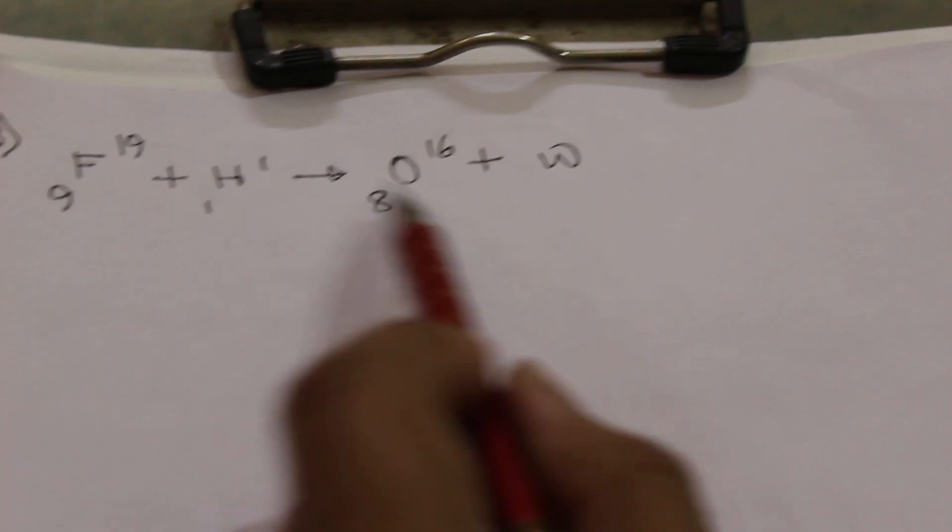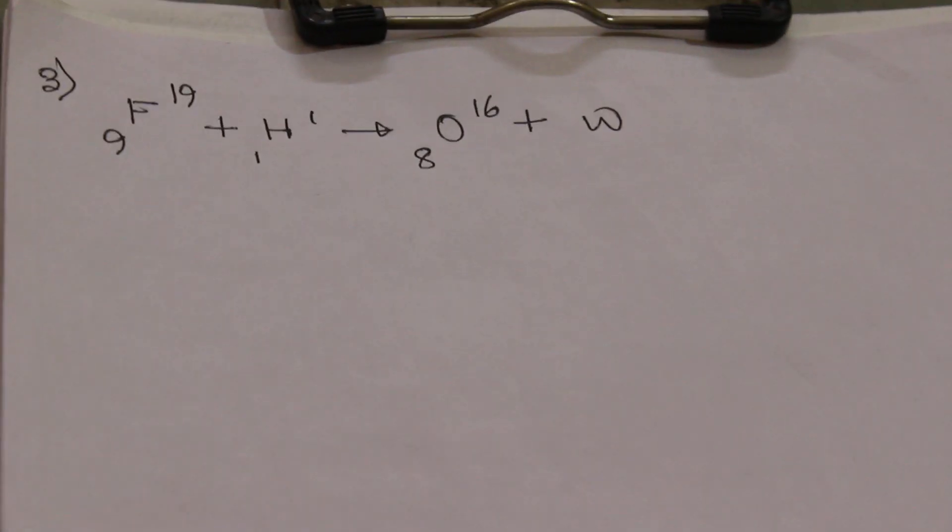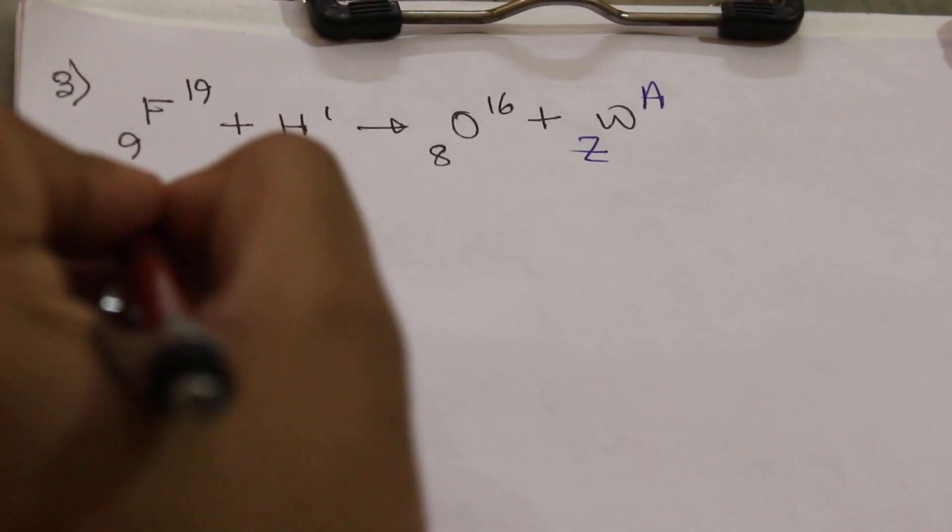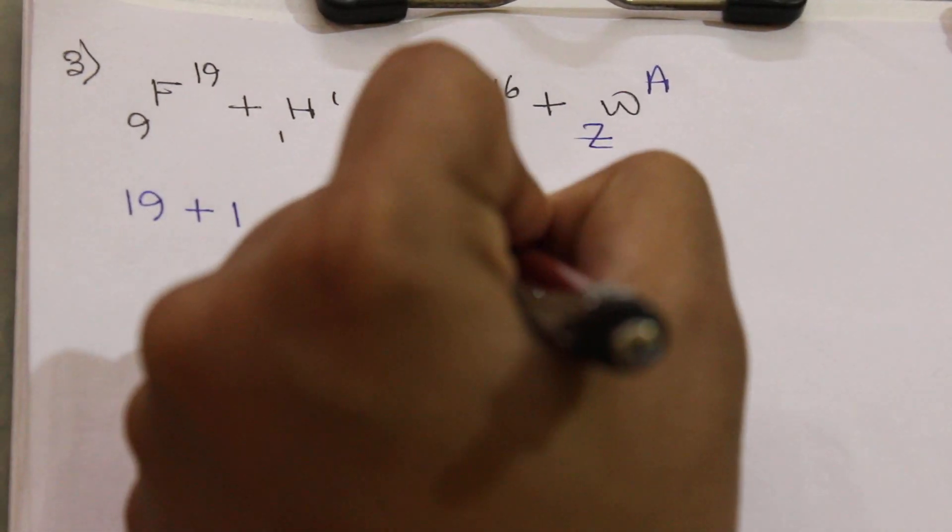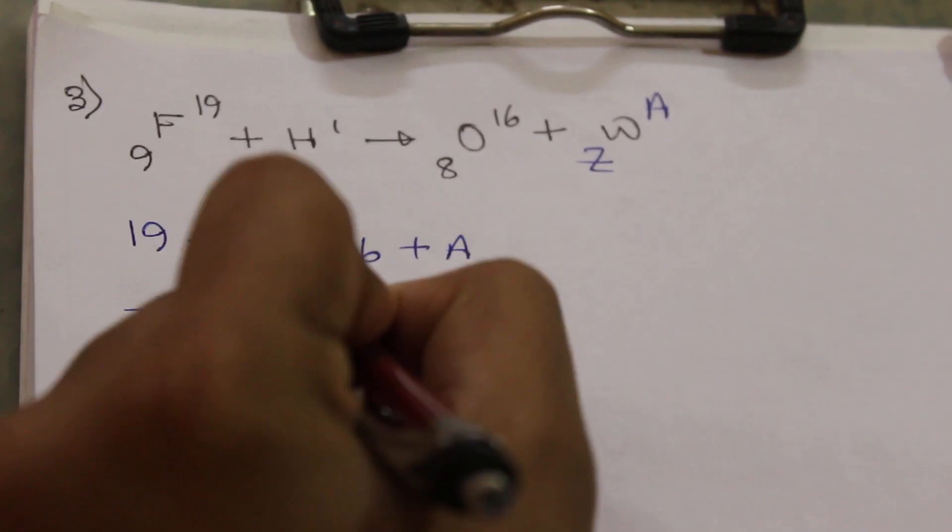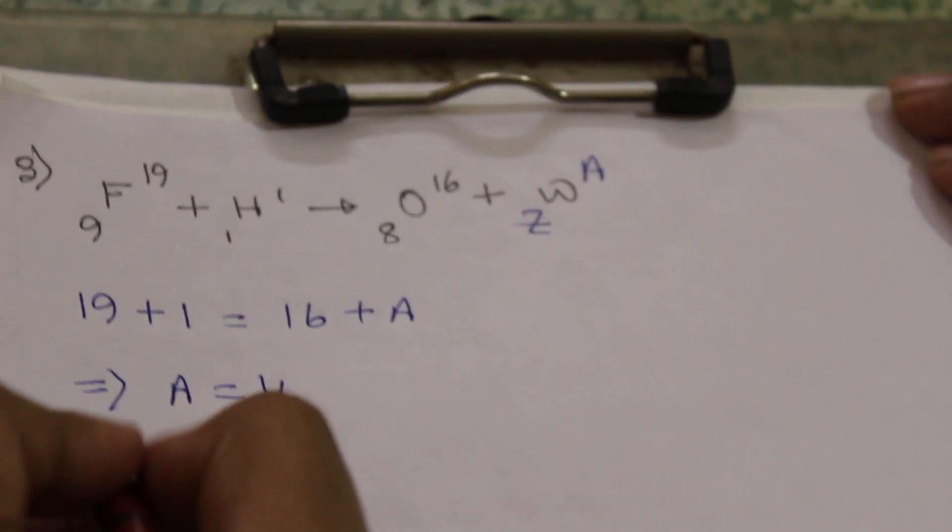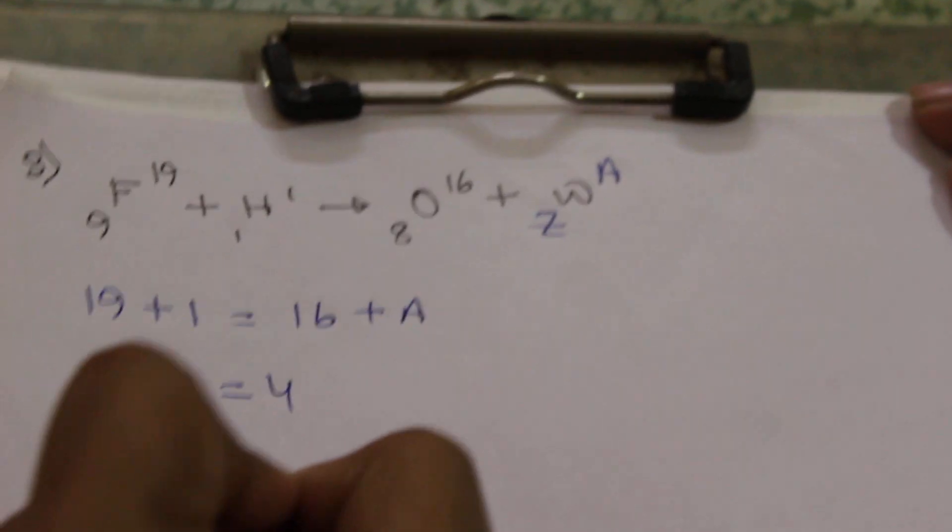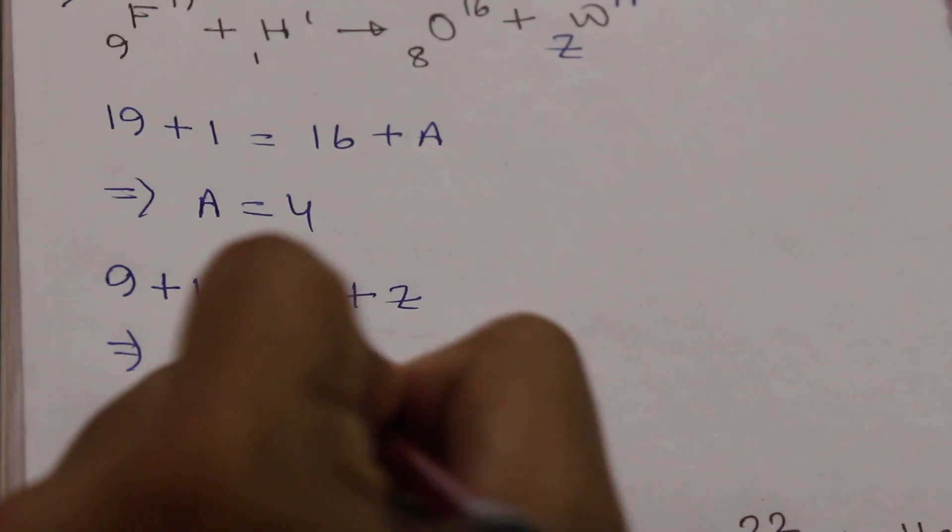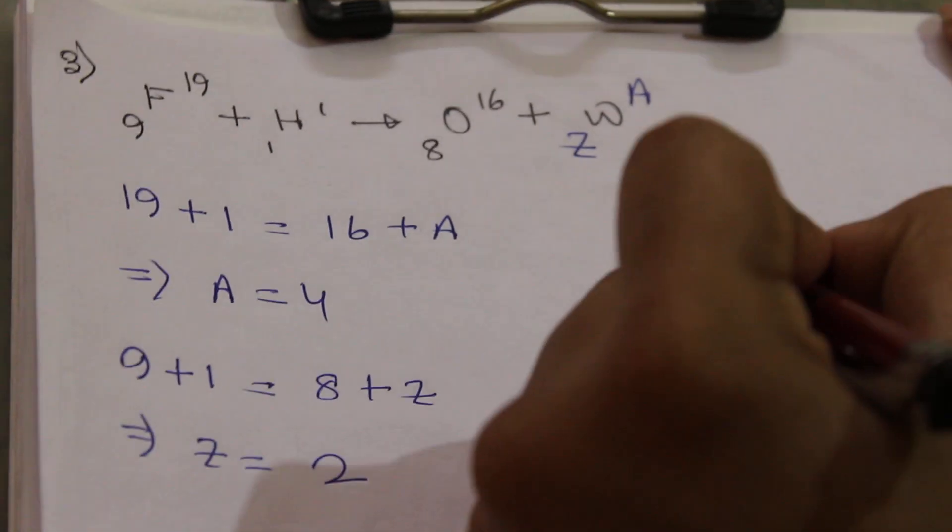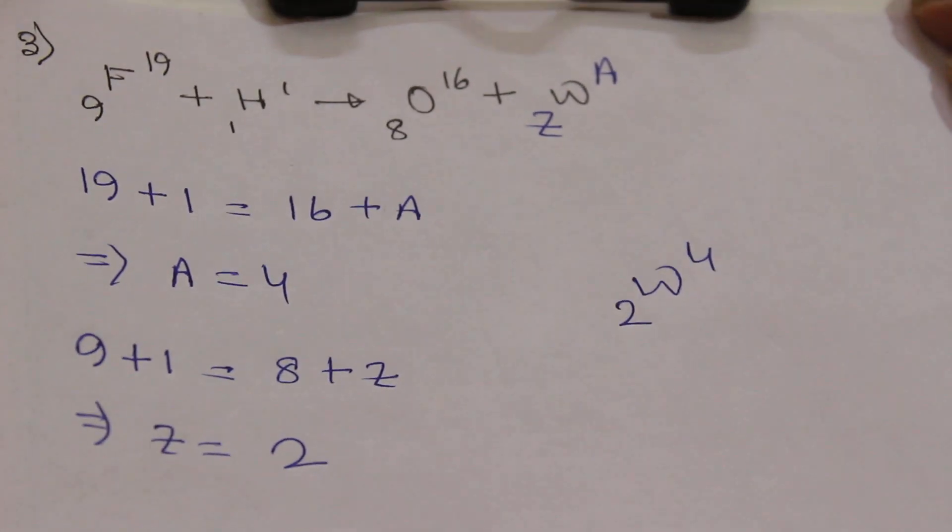We have to get the element W from this equation. So you can write A and Z here. So if we balance mass number, 19 plus 1 equal to 16 plus A, from here we will get A equal to 4. And if we balance atomic number, then 9 plus 1 equal to 8 plus Z, so Z will be equal to 2. So W is 4/2.